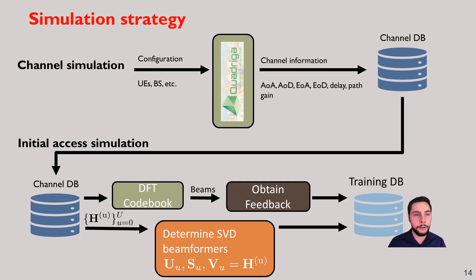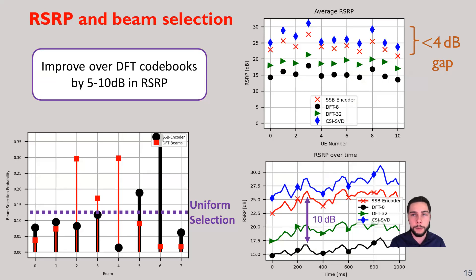This actually works out quite well. Here we show three different graphs. On the top right, we show the average RSRP for each UE index, corresponding to our case, which is the SSB encoder, that's our neural network, the DFT8, which is an 8-beam codebook, the DFT32, which is a 32-beam codebook, and the CSISVD, which is if you have perfect channel state information and perform the SVD, which is essentially what we're training our neural network to try to do. You can see the gap is less than 4 dB in general, comparing ours to the CSISVD case.